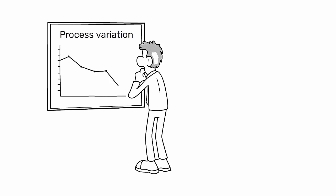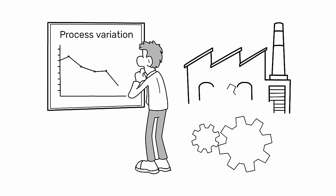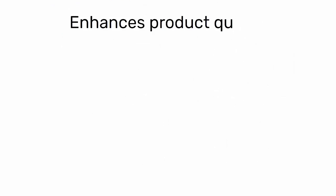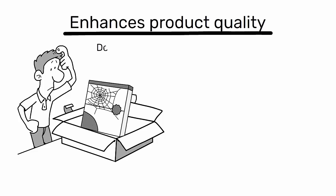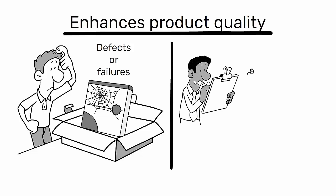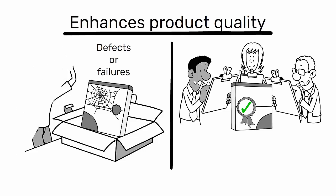Reducing process variation is crucial in industrial engineering for several reasons. Firstly, it enhances product quality. High process variation can lead to inconsistencies in the final product, which can result in defects or failures. By reducing variation, you ensure that each product meets the desired specifications and quality standards consistently.